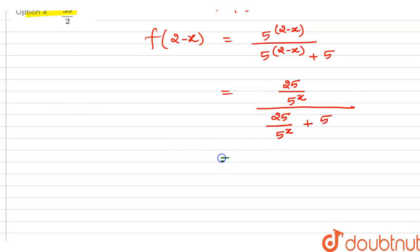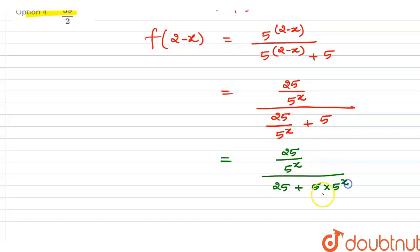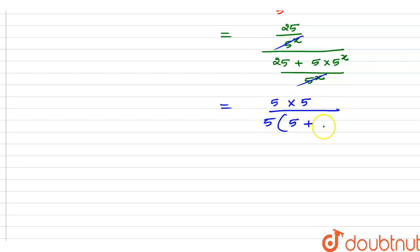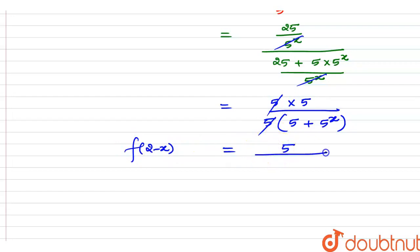We can simplify this further. This will be 25 divided by 5 raised to power x, in the numerator. Taking the LCM in the denominator gives us 25 plus 5 times 5 raised to power x, all over 5 raised to power x. After cancellation and taking 5 as a common factor, we get f(2 − x) = 5 divided by (5 + 5 raised to power x).